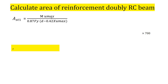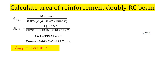Ast1 equals the maximum moment of resistance divided by (0.87·fy × lever arm). Putting in all values: fy = 500, d = 245 mm (effective depth), xu,max = 0.46 × 245 = 112.7 mm. The area of tension reinforcement for the balanced section, Ast1, comes out to 559 mm².